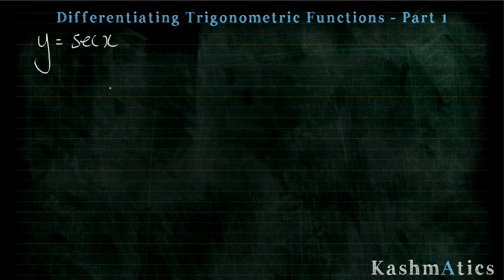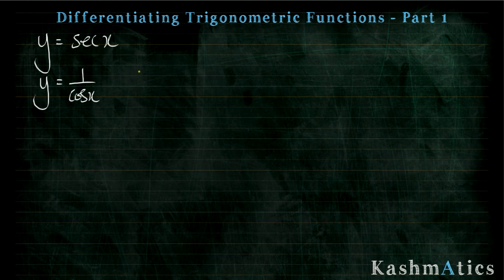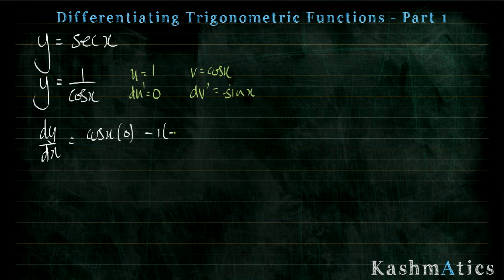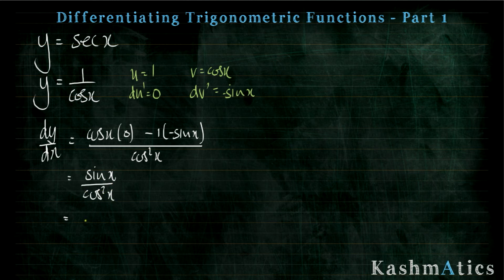The next one is y equals sec x. Before I begin I need to rewrite it as y equals one over cos x. I say u equals one and v equals cos x, so du equals zero and dv equals minus sin x. Putting that into the quotient rule: dy by dx equals v du — cos x times zero — take away u dv — one times minus sin x — all over v squared, which is cos squared x. The first term disappears, leaving a positive sin x all over cos squared x.